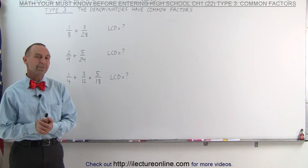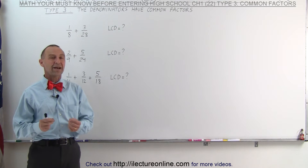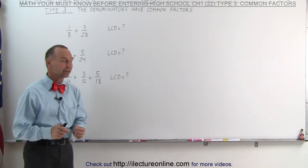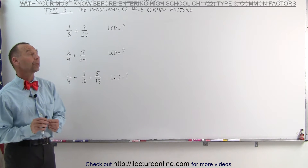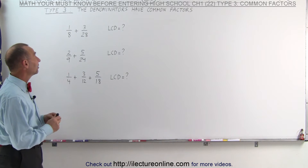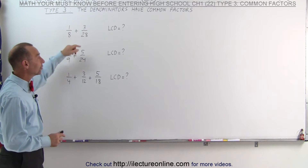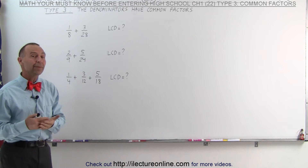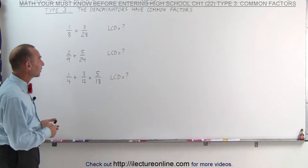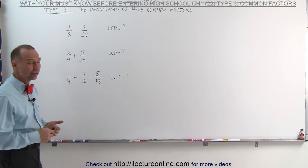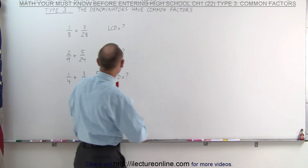Welcome to Electronaline. Here are some denominators that have common factors. The technique to find the lowest common denominator is simply to take each of the denominators and write them as a product of their factors. Let's use that technique that we've learned before to do that.